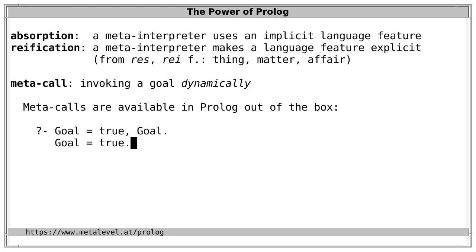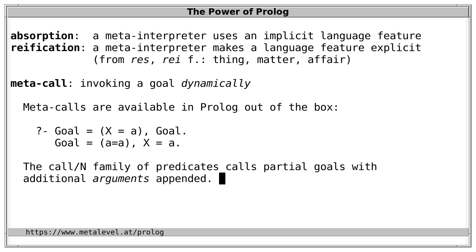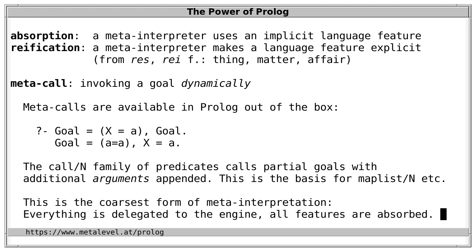We get the substitution Goal = true. If Goal equals the unification X = a, then in response we also get X = a. We can make the meta-call explicit by writing 'call(Goal)', which is equivalent to simply stating Goal. We can use the call/N family of predicates to call partial goals with additional arguments appended — the basis for maplist and other meta-predicates. This is the coarsest form of meta-interpretation, because if we perform a meta-call, everything is delegated to the Prolog engine: all features are absorbed.